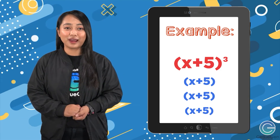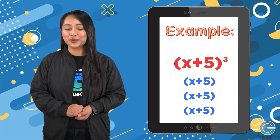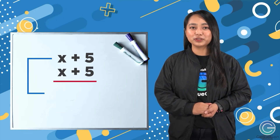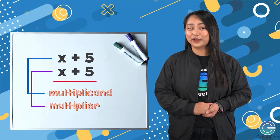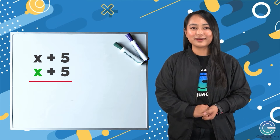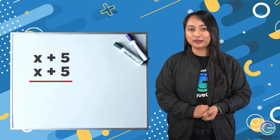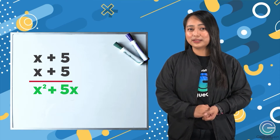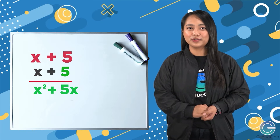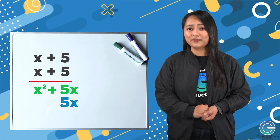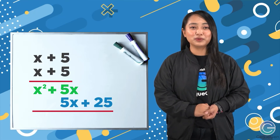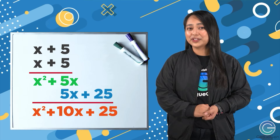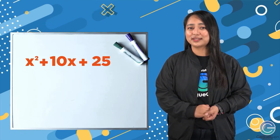Originally we multiply the first two factors and afterwards multiply the third. So we have x plus five times x plus five — the first x plus five is our multiplicand and the second x plus five is our multiplier. Using x from the multiplier: x times x is x squared, and x times 5 is 5x. Then using 5 from the multiplier: 5 times x is 5x, and 5 times 5 is 25. Combining similar terms, 5x plus 5x gives us 10x, so x plus 5 times x plus 5 equals x squared plus 10x plus 25.